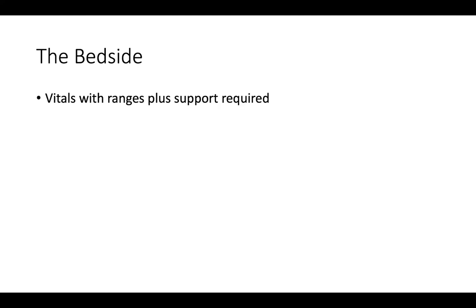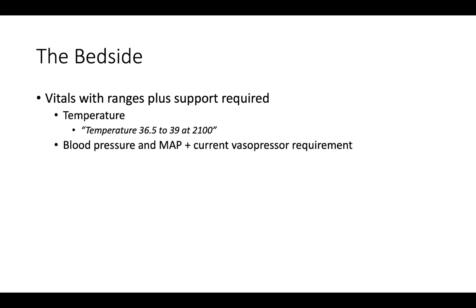The objective portion of the presentation should always begin with the vitals. When discussing the vitals, it is important to always include ranges plus the support required to obtain those numbers. Start with the temperature and report both the minimum and maximum temperature. If the patient has been febrile, include the time of the last fever. For example: temperature 36.5 to 39 at 2100. Next, report blood pressure and mean arterial pressure along with the current vasopressor requirement. For example: blood pressure 80 to 90 over 50s, MAP 60 to 65, on 0.1 of norepinephrine.